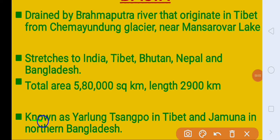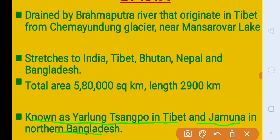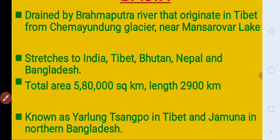Brahmaputra River is known as Yarlung Tsangpo in Tibet. Tibet mein Brahmaputra River ka naam hai Yarlung Tsangpo. And in Bangladesh, Bangladesh mein is ka naam change ho jata hai — that is Jamuna. River ka naam change ho jata hai.